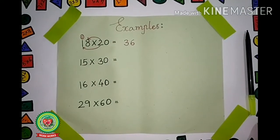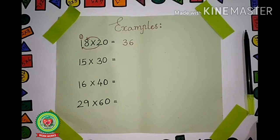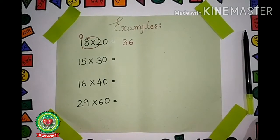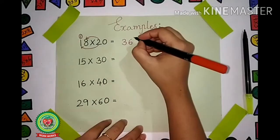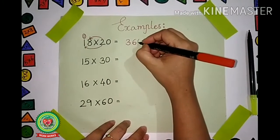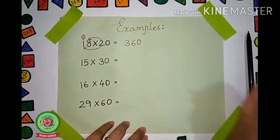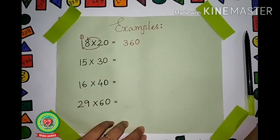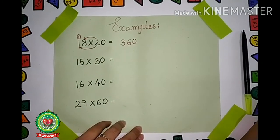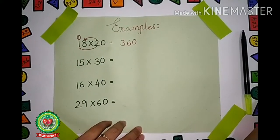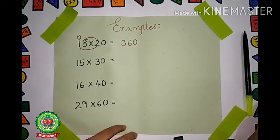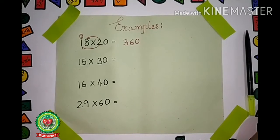Now remove your finger. What can you see? There is a 0. So we will put the 0, and our answer is 360. Now look at the second example.